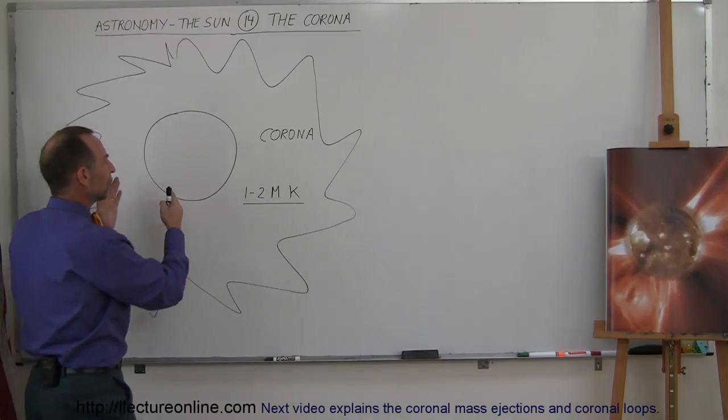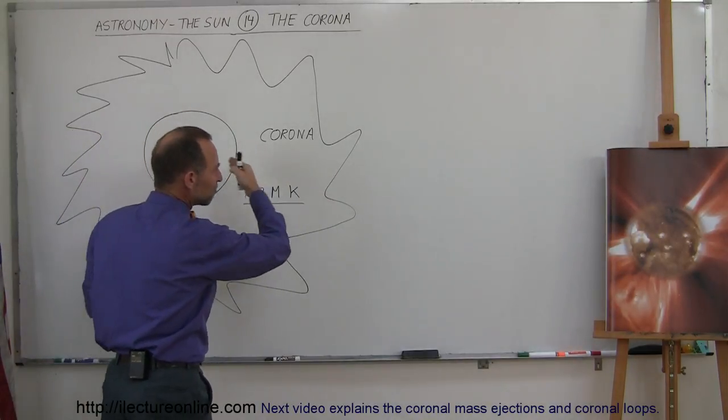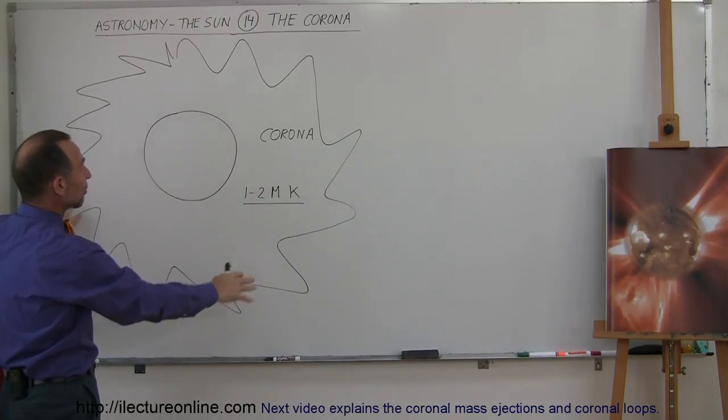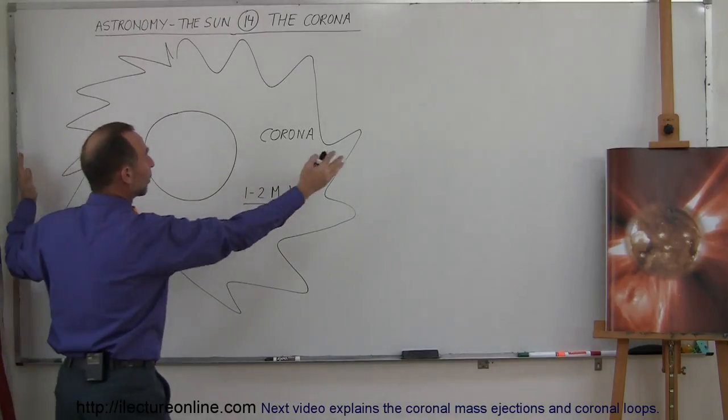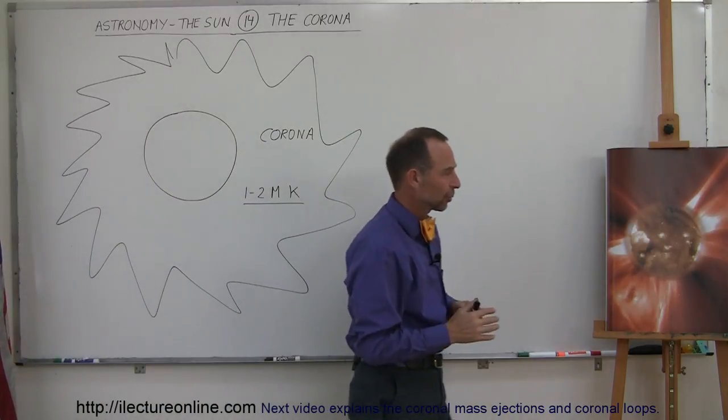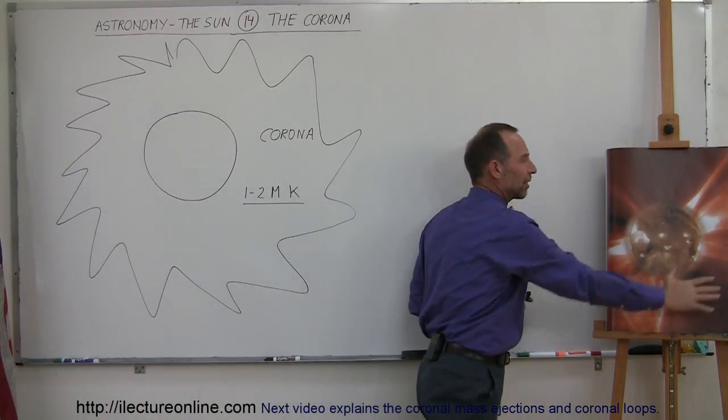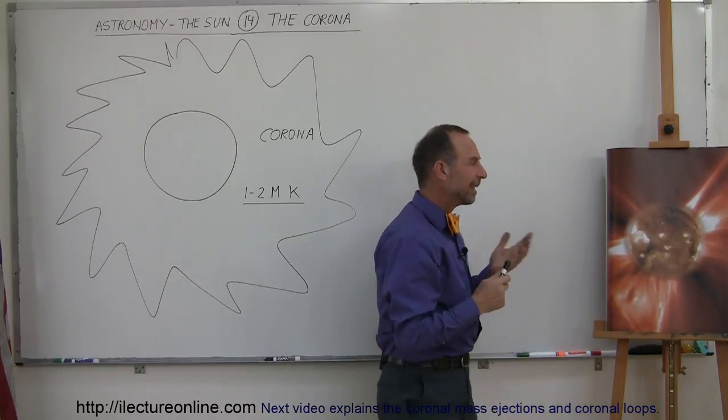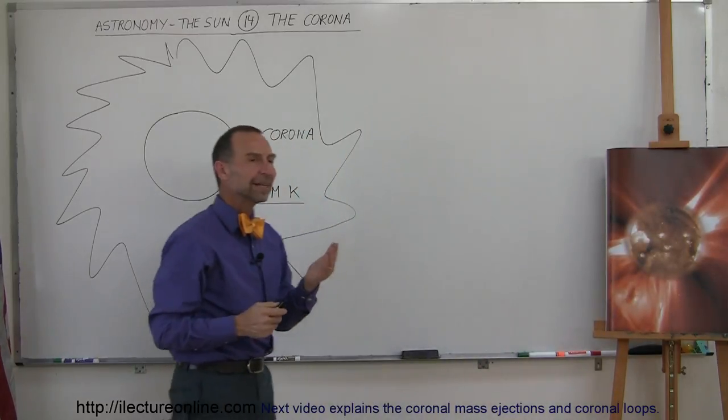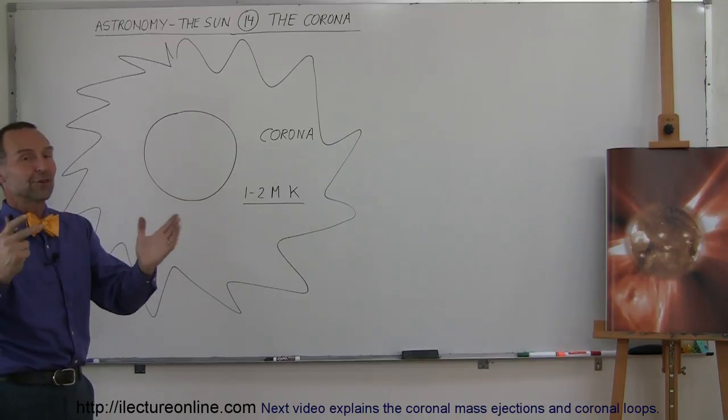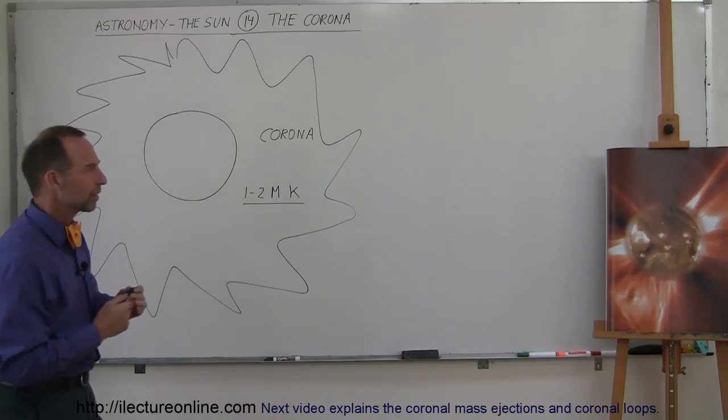Now the corona extends far beyond the sun, several million kilometers away from the sun. I've actually under-exaggerated the size of the corona. It's actually bigger than what I show you here. And in this picture here, you get a pretty good feel for the size of the corona. Now all this region around there is very, very rarefied gas, where the density of the gas in the corona is far less dense than the density of the chromosphere, which is far less dense than the density of the photosphere, which is far less dense than the atmosphere of the Earth.